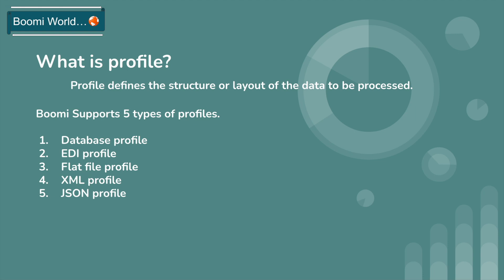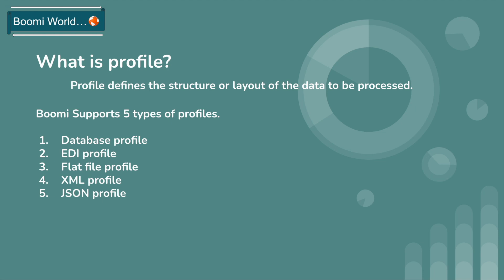Or on which format you want to send data to the target system. So it is based on the source and target system. Boomi will allow five types of profiles: database profile, EDI profile, flat file profile, XML profile, and JSON profile. In these formats, Boomi supports receiving or sending data.